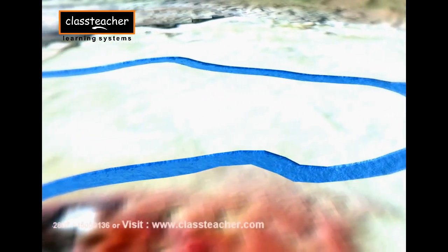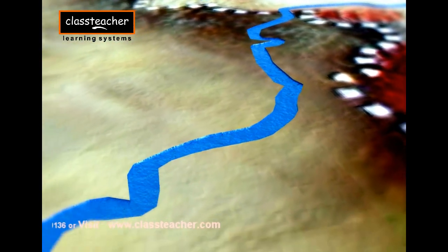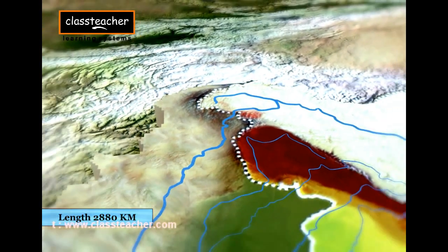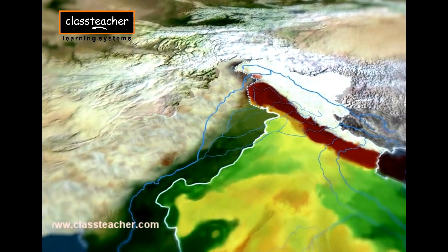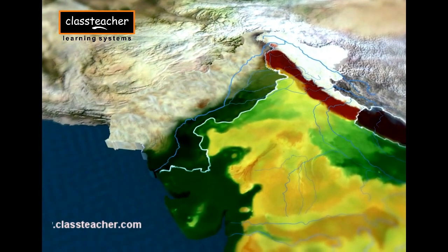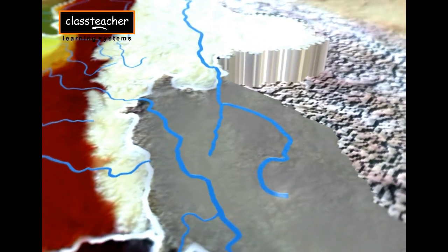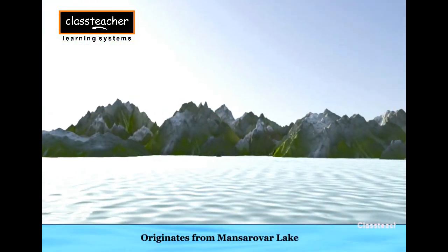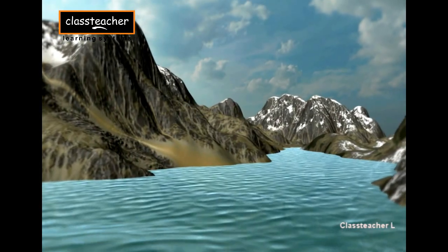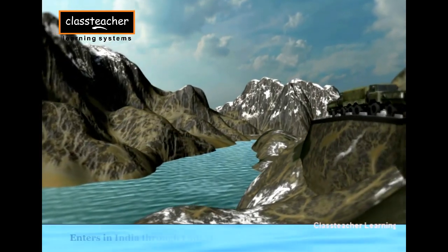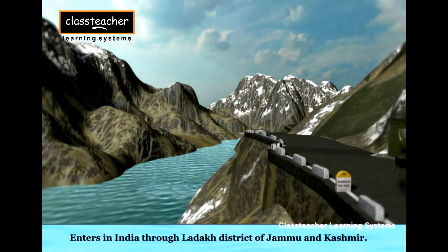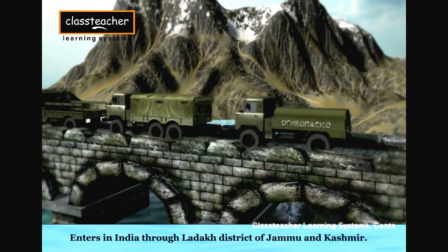The Indus river system is one of the largest river basins of the world, covering a length of 2,880 km, of which 1,114 km lies in India. It is also known as Sindhu. It originates from a glacier in the Kailasha mountain near Mansarovar lake in the Tibet plateau. Following west, it enters India in the Ladakh district of Jammu and Kashmir, then cuts across the Ladakh range and enters into Pakistan.